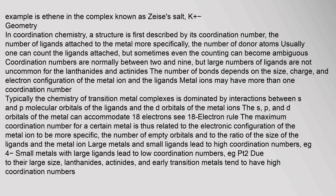In coordination chemistry, a structure is first described by its coordination number — the number of ligands attached to the metal, or more specifically the number of donor atoms. Coordination numbers are normally between 2 and 9, but large numbers of ligands are not uncommon for the lanthanides and actinides. The number of bonds depends on the size, charge, and electron configuration of the metal ion and the ligands. The chemistry of transition metal complexes is dominated by interactions between s and p molecular orbitals of the ligands and the d orbitals of the metal ions. The s, p, and d orbitals of the metal can accommodate 18 electrons (see 18-electron rule).